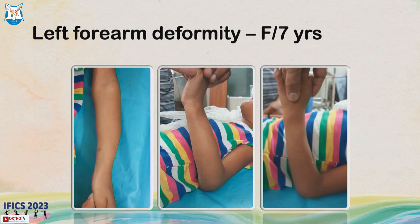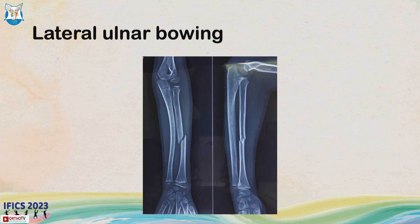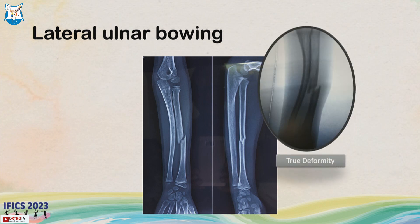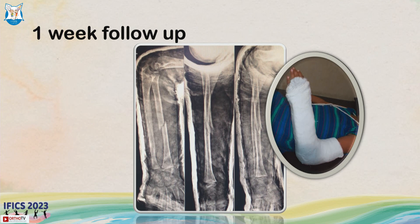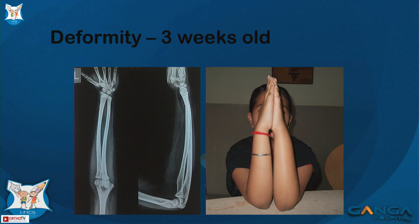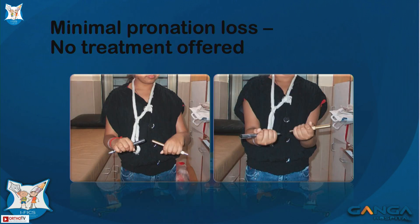Left forearm deformity in a 7-year-old female — there was an ulnar lateral bowing and this shows the amount of bowing. It was about 3 days old. I gave it a try; it did improve but not 100%, though ultimately the functional result was good. This was a 3-week-old deformity in an adolescent girl — at that point it was very difficult to correct, so we did not do anything. She initially had some rotational restriction which was not functionally disabling, but had it been corrected on day 1 she would have had better results.